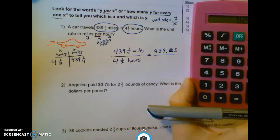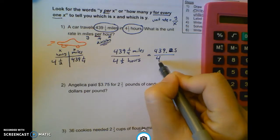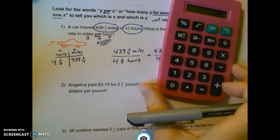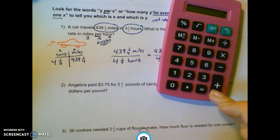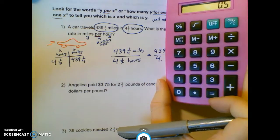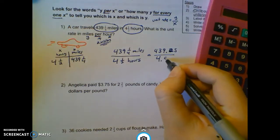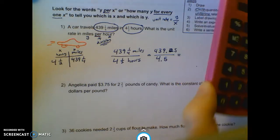Four and a half, similarly. I've got my four. I turn the fraction into a decimal. One divided by two gives me 0.5.